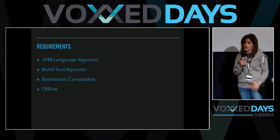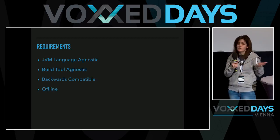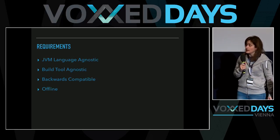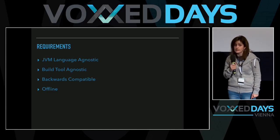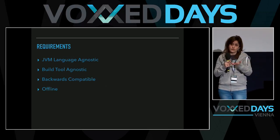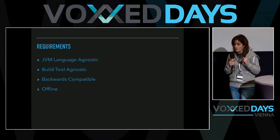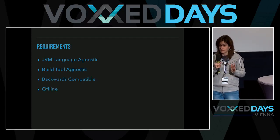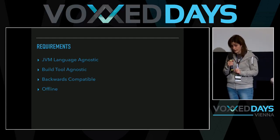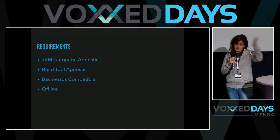At Chipstate we have these requirements for this kind of tool. First, it needs to be language agnostic on the JVM — we have projects written in Scala, Kotlin, and Java, so we need a generic approach. Second, it needs to work in both Maven and Gradle. Third, it needs to be backwards compatible, meaning we should avoid as many changes as possible to existing tests. And finally, it should work offline at least for the incremental part, because master is always built remotely in Travis.